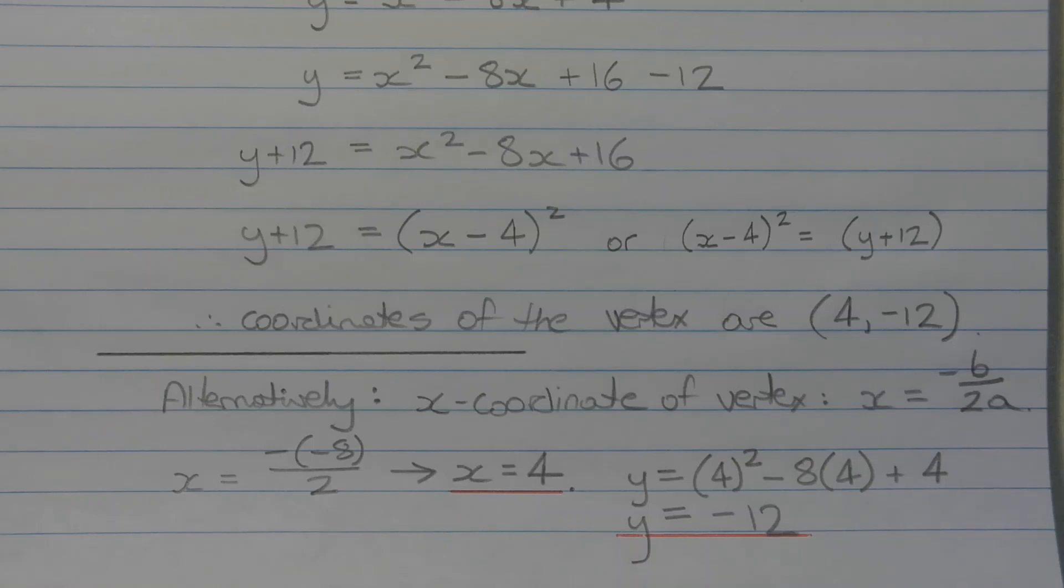To find the y-coordinate of the vertex, we substitute x equals 4 into the original equation. So we get y is equal to 4 squared minus 8 times 4 plus 4, which equals negative 12, which corresponds to the y-coordinate of the vertex we found previously.